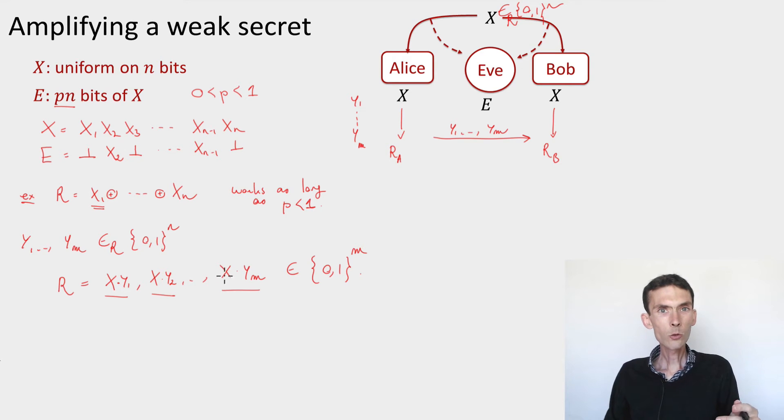So how do we argue that this looks uniformly random? One way to think about it is to generalize our perspective on the eavesdropper side information a little bit. Think of it not just as fixed bits but think of it as just linear equations. So for instance the fact that e contains x_2 is the same as saying that e contains the dot product of x and the vector which is (0,1,0,0,0,0,0).